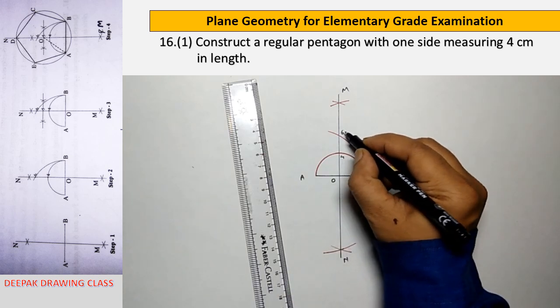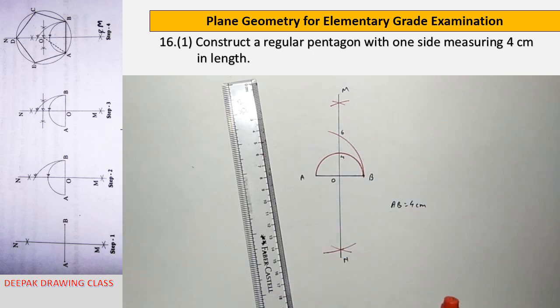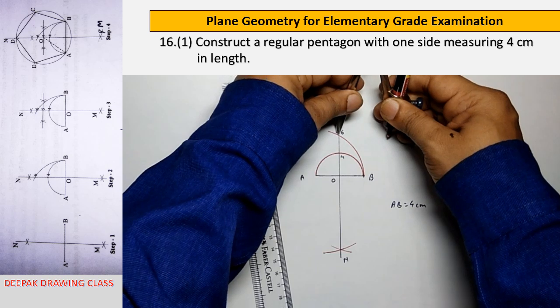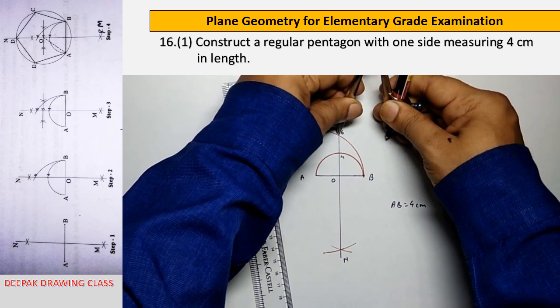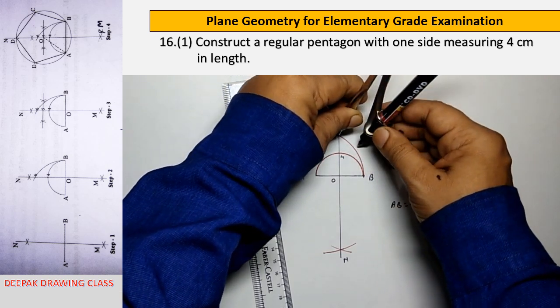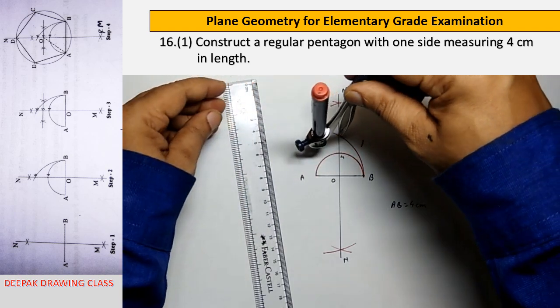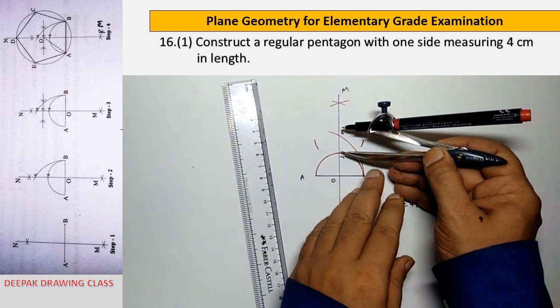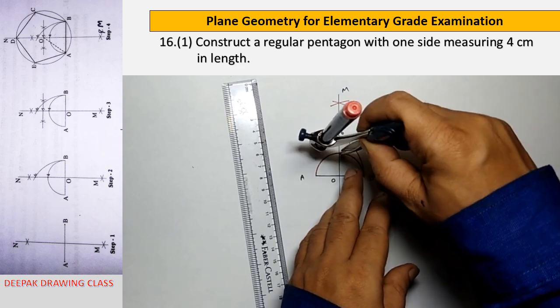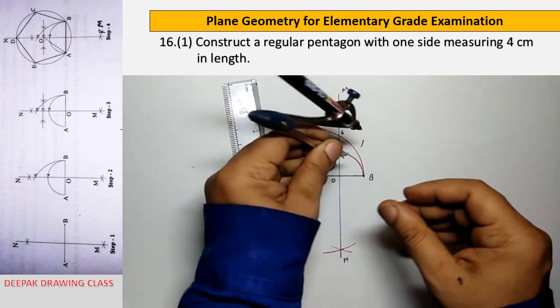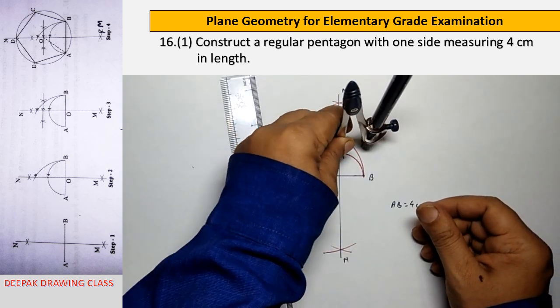With center A and radius equal to AB, draw an arc intersecting the perpendicular bisector. Name the intersecting point as 6. Then bisect the line joining points 4 and 6. Name the point as 5.